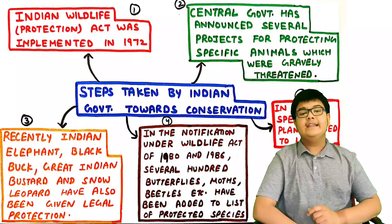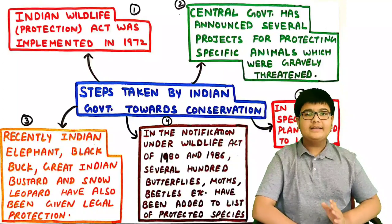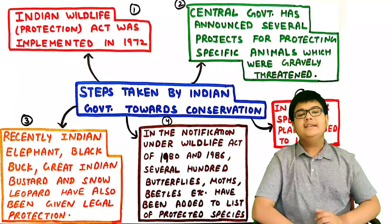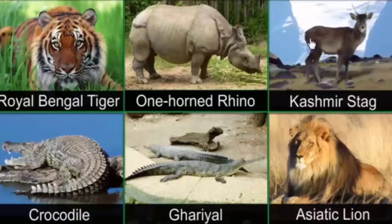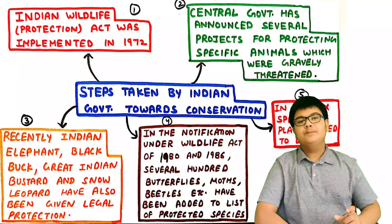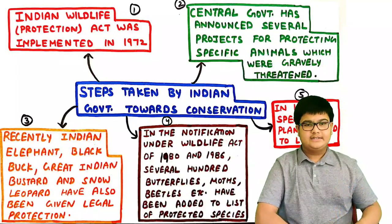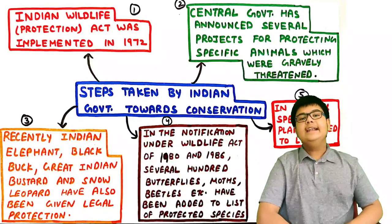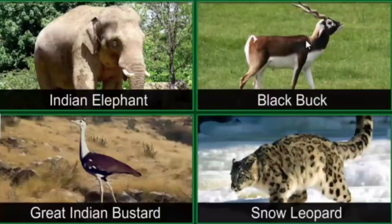Examples of threatened species covered by government projects include tiger, one-horned rhinoceros, Kashmir stag, freshwater and saltwater crocodiles, gharial, Asiatic lion, etc. We shall learn about Project Tiger in the next section.